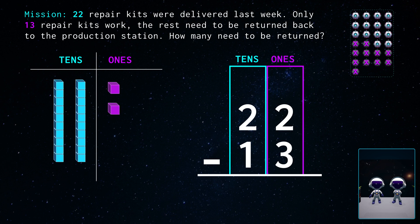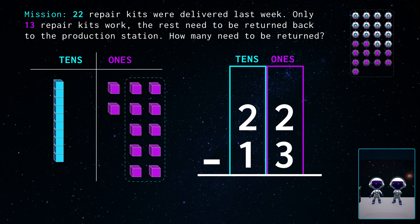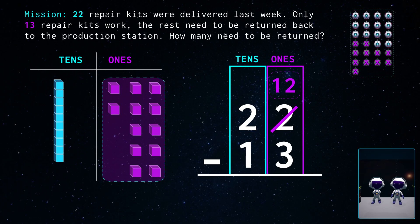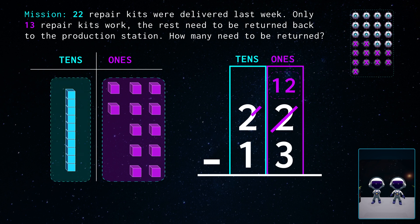Great idea! Our total number of 22 is made up of two tens and two ones. Three is greater than two, so we can't subtract it. We'll have to regroup one ten into ten ones. Now we have twelve ones. Next, we'll cross out the number two in the ones place and replace it with twelve. Now we only have one ten left, so we can cross out the two in the tens place and replace it with one.